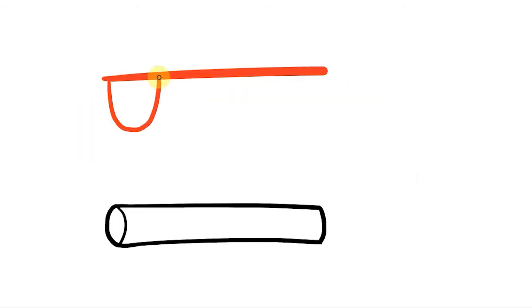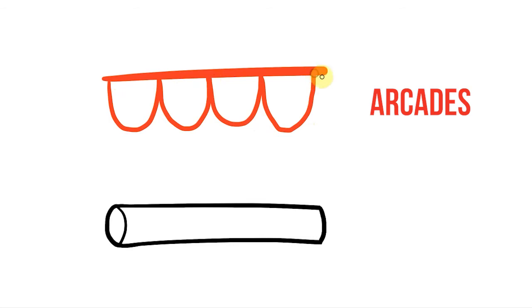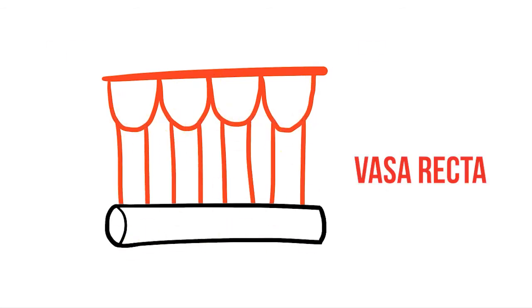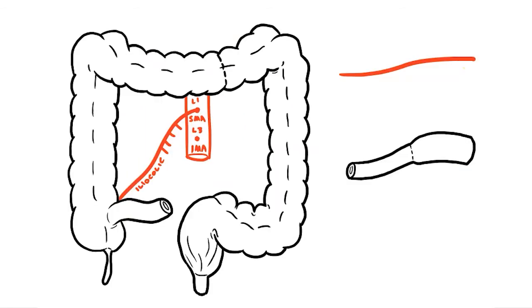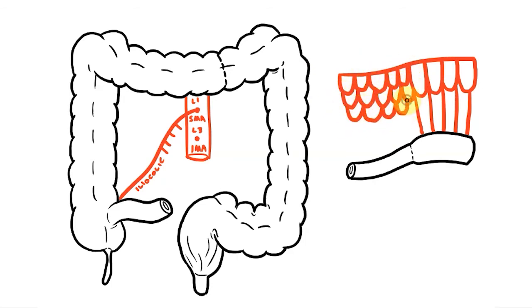Arteries to the small intestine initially form loops called arcades that send straight branches or vasa recta to the gut tube. In the jejunum these loops are small in number and large in size with a few long vasa recta. By the time you get to the ileum the arcades are more numerous with shorter vasa recta. This increasingly complex blood supply allows us to absorb more and more nutrients as food passes through our gut.